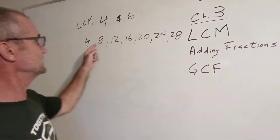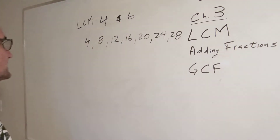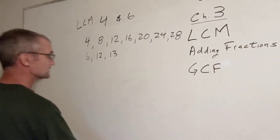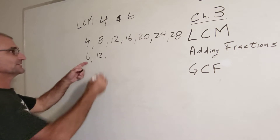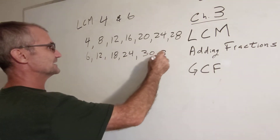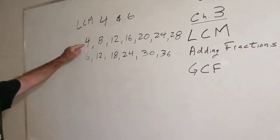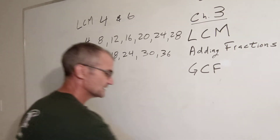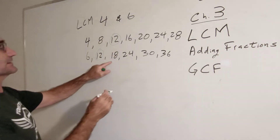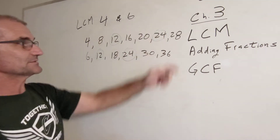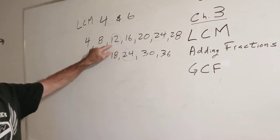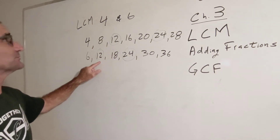Now I've got to find what's common between these and the multiples of 6. So let's write out the multiples of 6: 6 times 1, 6 times 2, 6 times 3 is 18, 6 times 4, 6 times 5, 6 times 6, and that keeps going. Now I'm going to look at the ones they have in common — a 12 and a 12, they both have 12. They both have 24. And the least common multiple is the smallest one, which is 12. So 12 is the least common multiple of 4 and 6.